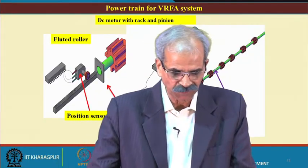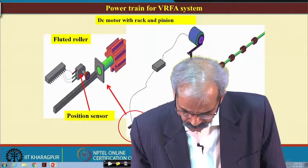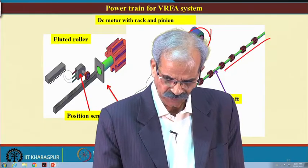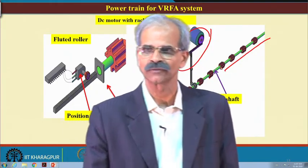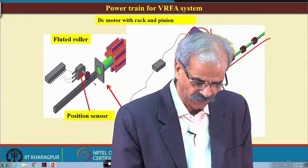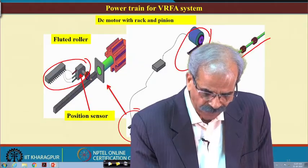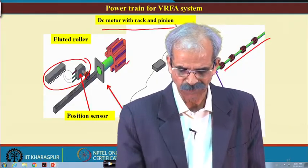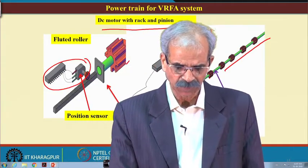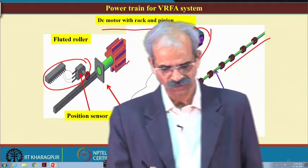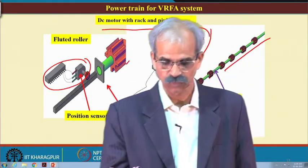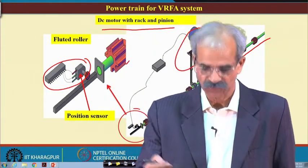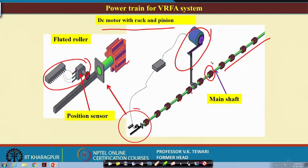The power train for the variable rate fertilizer system: this is the metering shaft, and these are the individual flutes. There is a position sensor connected here which will operate at this location so that the fluted roll can be adjusted. This shows the DC motor with rack-and-pinion arrangement. This is the power train of the variable rate fertilizer application system; you can think of designing a new system for fertilizer or seed based on this.